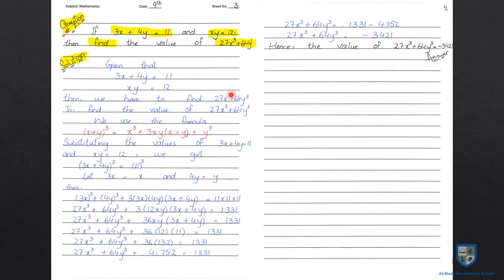This completes question number 7. Questions number 8 and 9 of Exercise 4.2 are similar — question 8 is just like question 6, and question 9 is just like question 7. You should solve them yourself using this same formula and method. In today's lecture, we discussed question numbers 6, 7, 8, and 9 using this formula. The remaining questions of Exercise 4.2 will be discussed in the next lecture, inshallah. Assalamu alaikum.